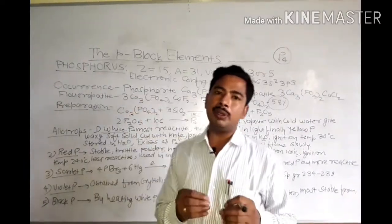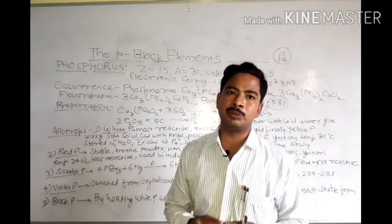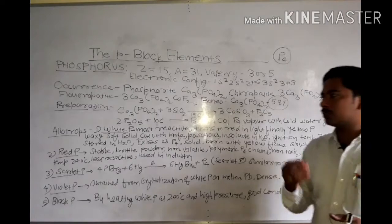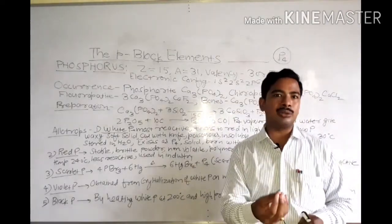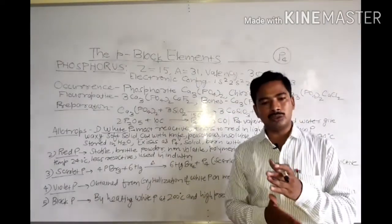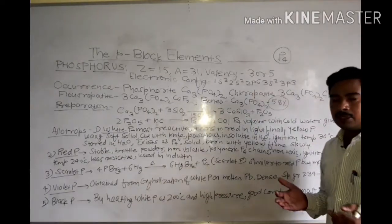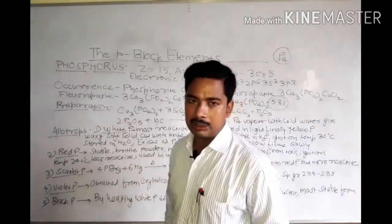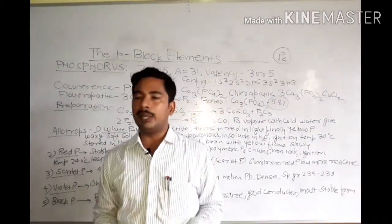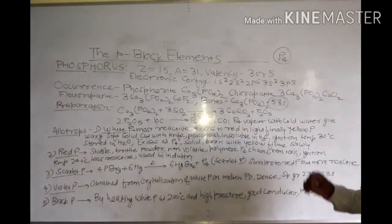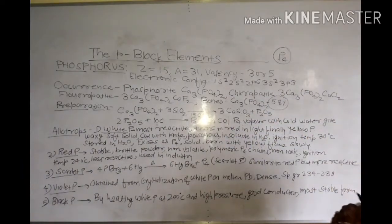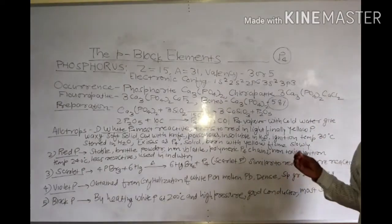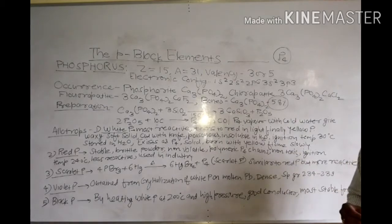White phosphorus is poisonous and insoluble in water. Its ignition temperature is 30 degrees Celsius and it is stored in water for stability. It exists in molecular form as the P4 molecule. It burns with a yellow flame with slow speed.